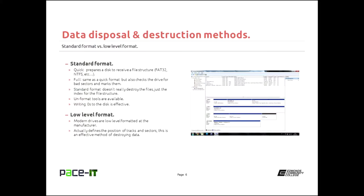You could write a bunch of zeros to the disk, which is fairly effective, but it can be not completely effective as well. A low-level format is a different story. Modern drives are low-level formatted at the manufacturer — back in the late 90s and early 2000s you could low-level format your own hard drive, but you can't really do that anymore. When you do a low-level format, you're actually defining the position of tracks and sectors on the hard drive. That is an effective method of destroying data, it's just a whole lot harder to do nowadays.